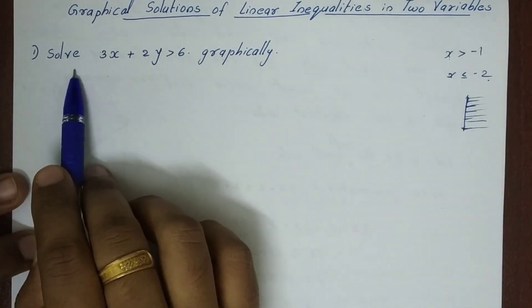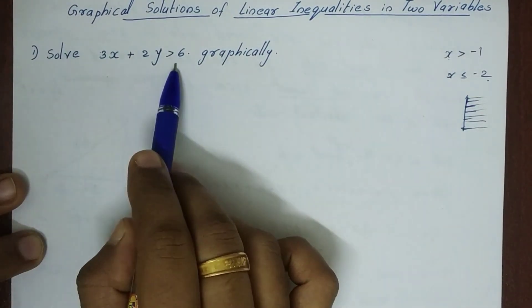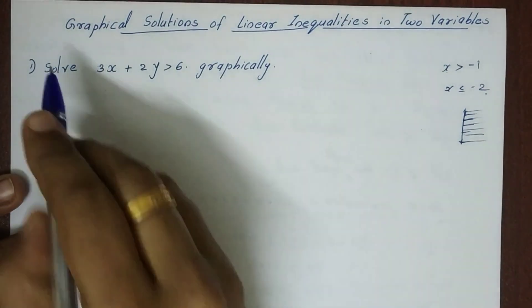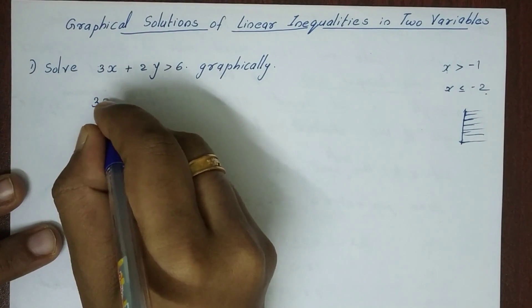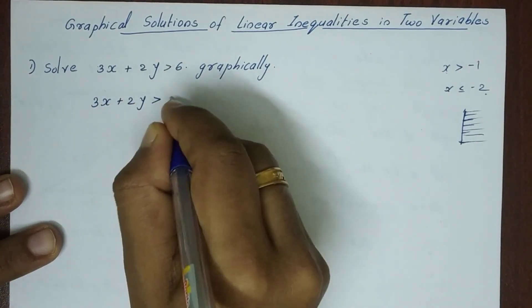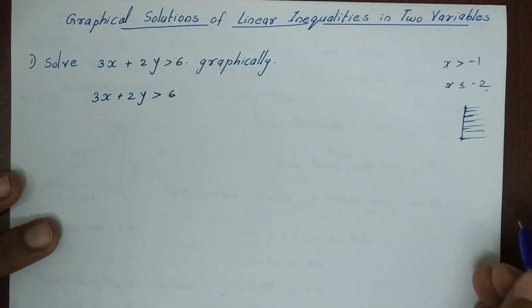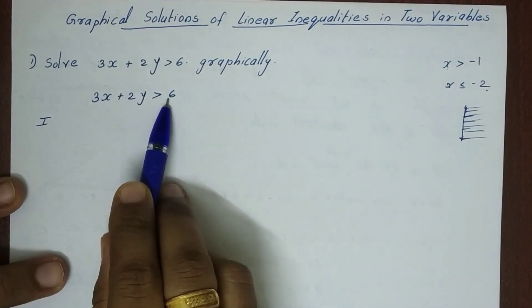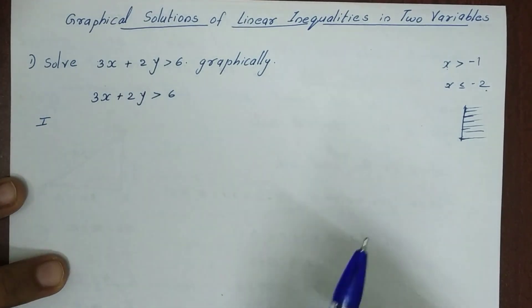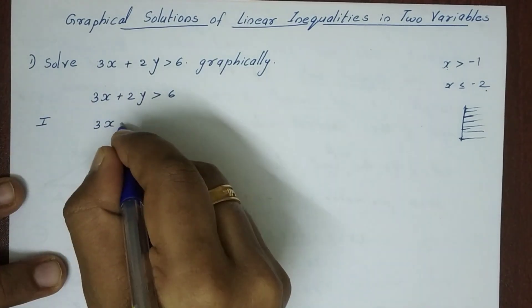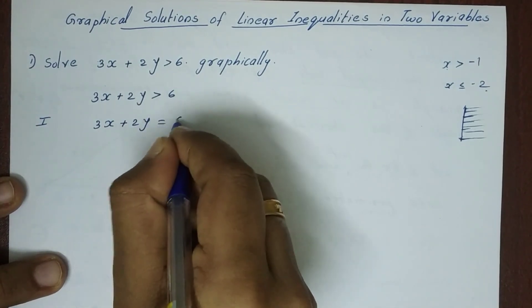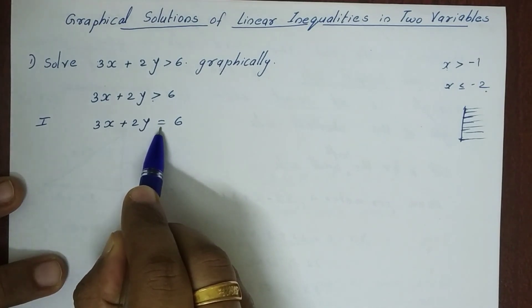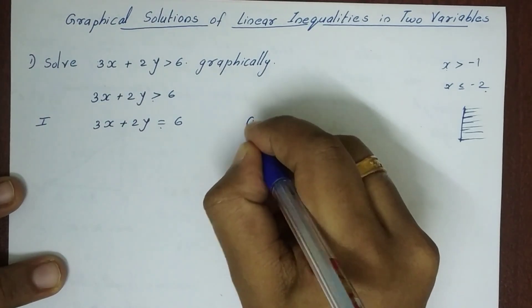First problem: solve 3x plus 2y greater than 6 graphically. The equation here is an inequality: 3x plus 2y greater than 6. We will find the inequality solution. What is the first step?